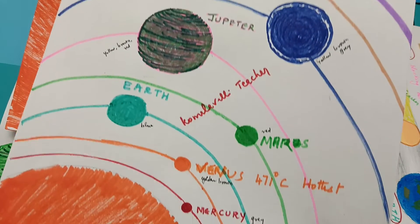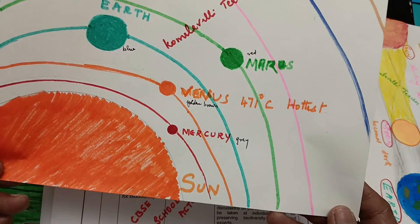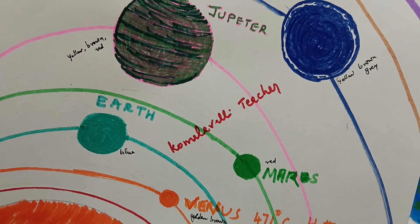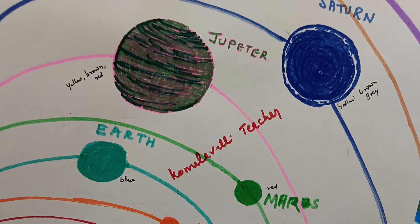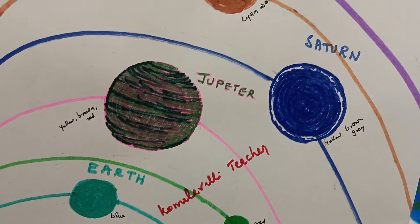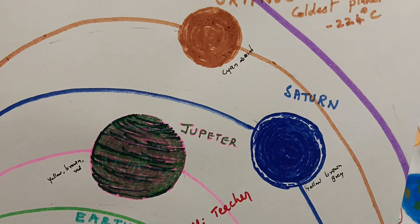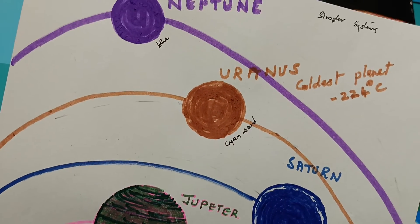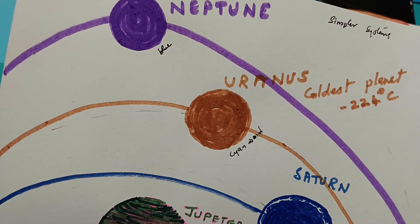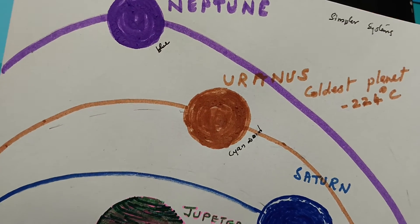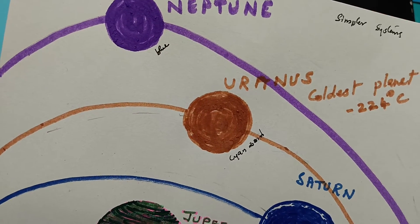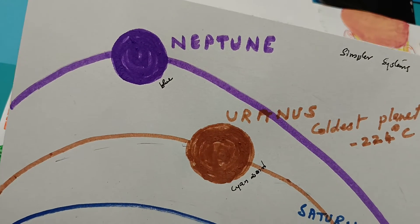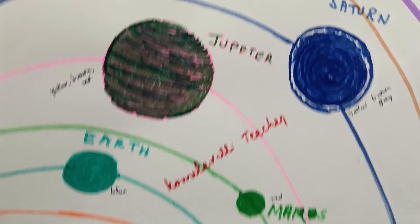Cyan is a color combination of red, green, and blue. And Neptune is blue in color. So the order by distance from the sun is: Mercury, Venus, Earth, Mars, Jupiter, Saturn, Uranus, and Neptune. Uranus is cyan and Neptune is blue — that is the order.